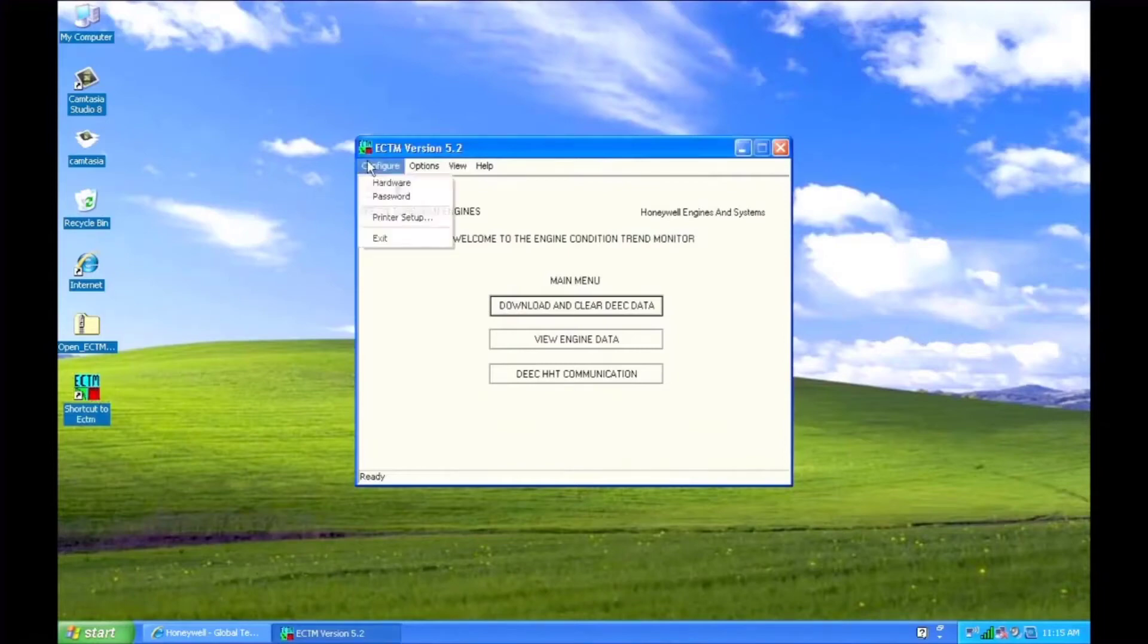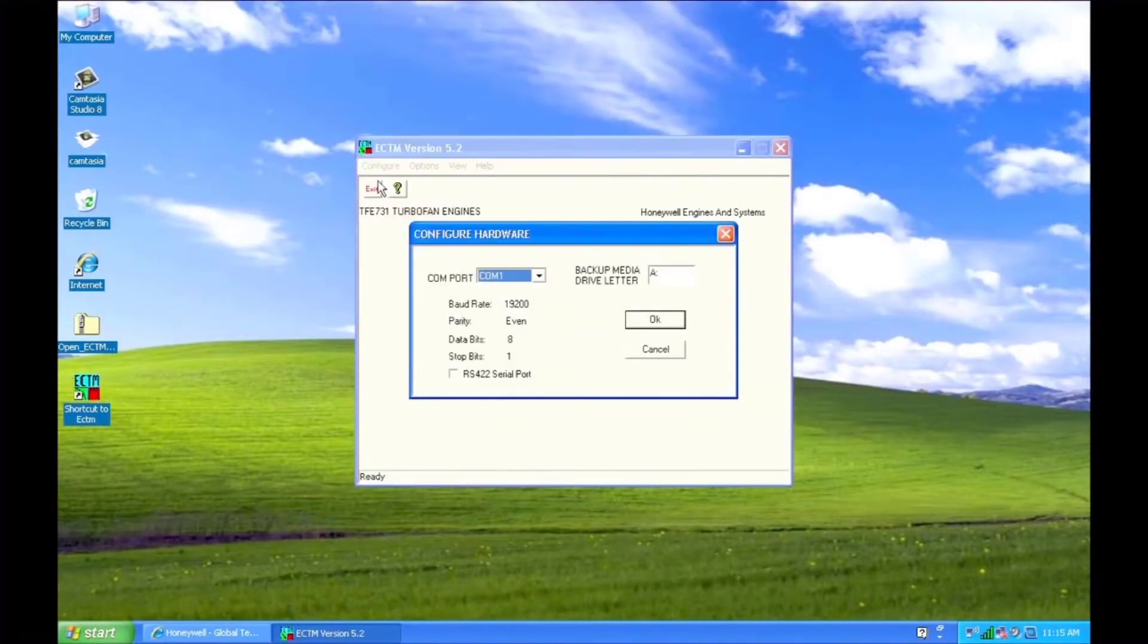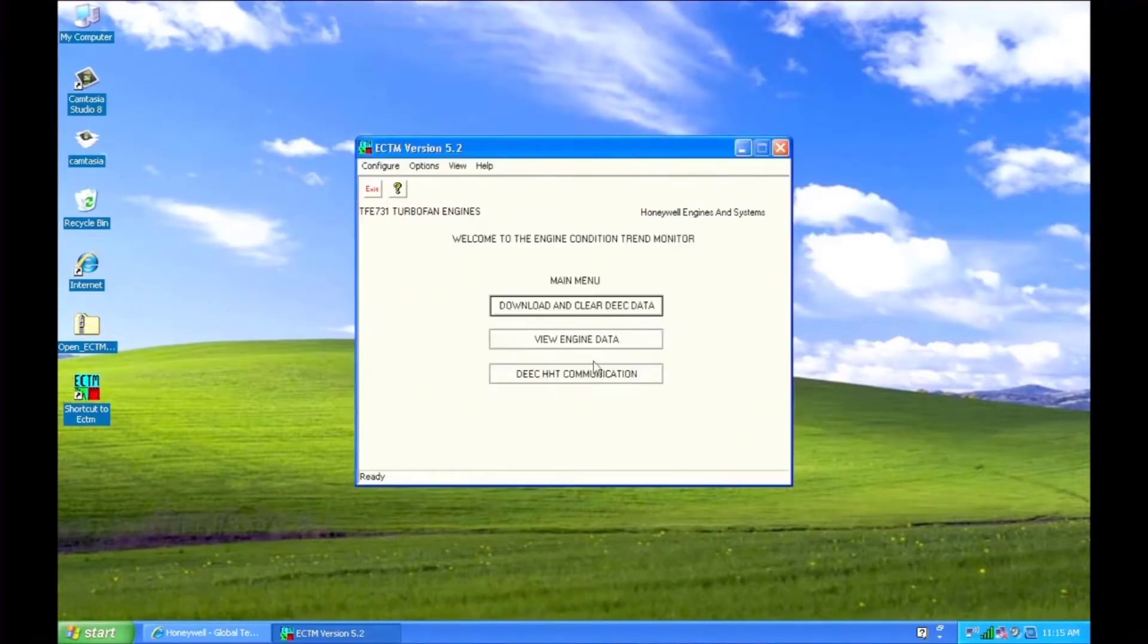In the ECTM program, go to the configure screen and select the COM port that's being used. The ECTM program is now configured to communicate with the DEEC.